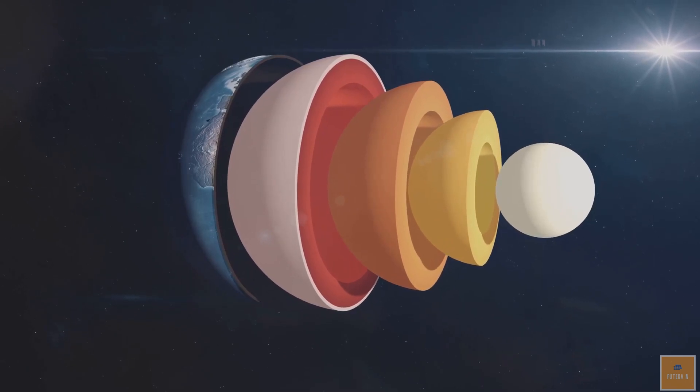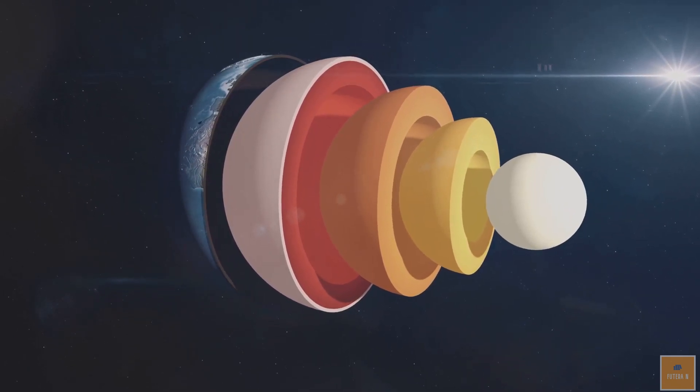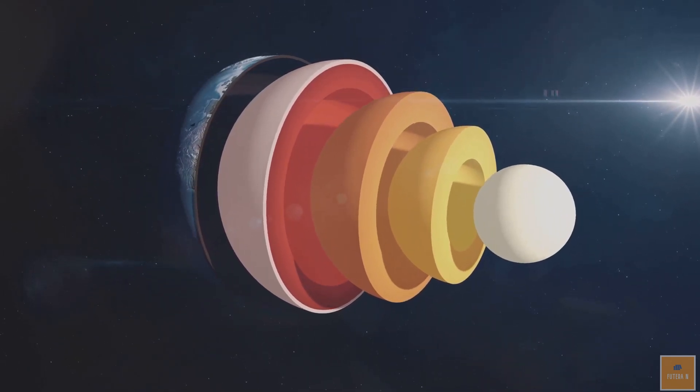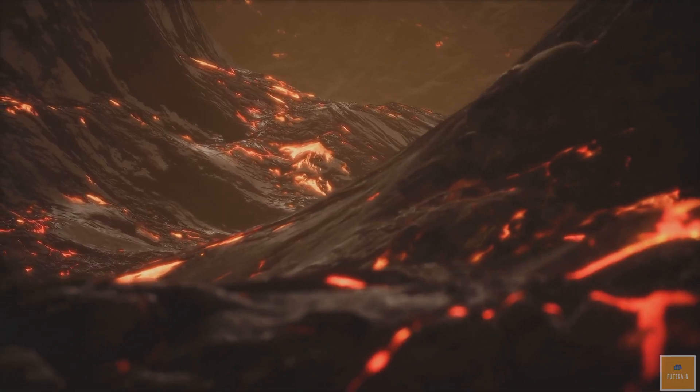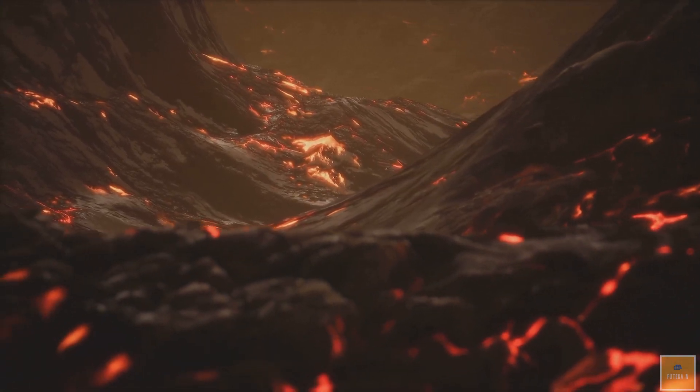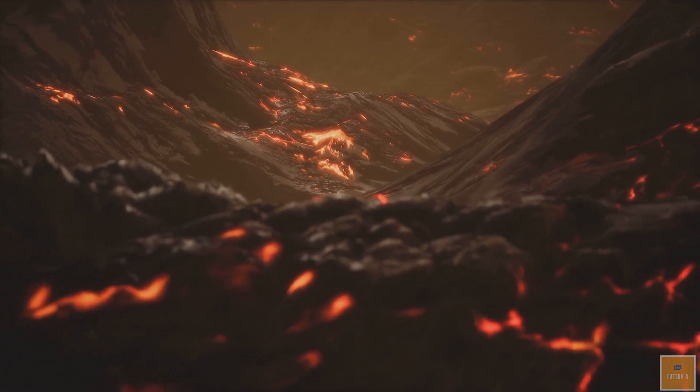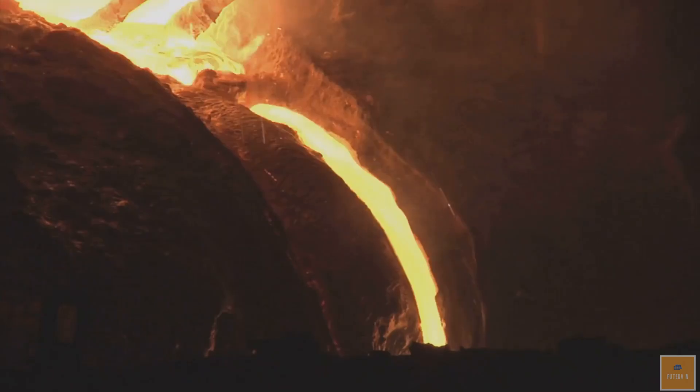The Earth's interior is composed of several layers with varying densities and compositions. The outermost layer, the crust, is relatively thin and composed of solid rock. Beneath the crust lies the mantle, a layer of hot, viscous rock that makes up the majority of the Earth's volume.